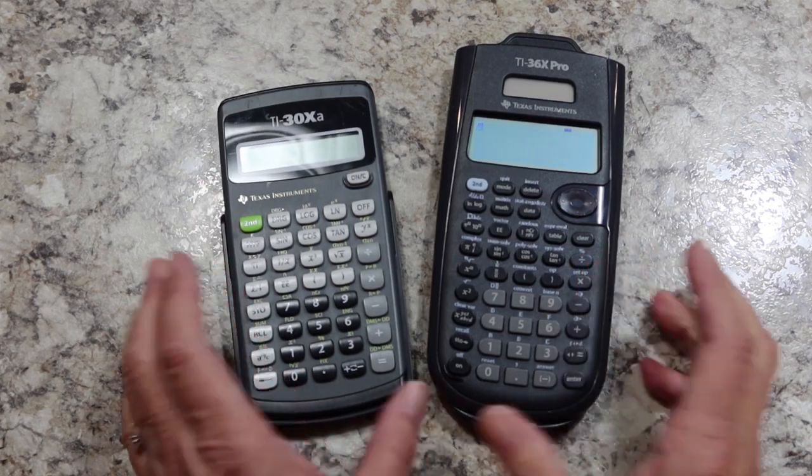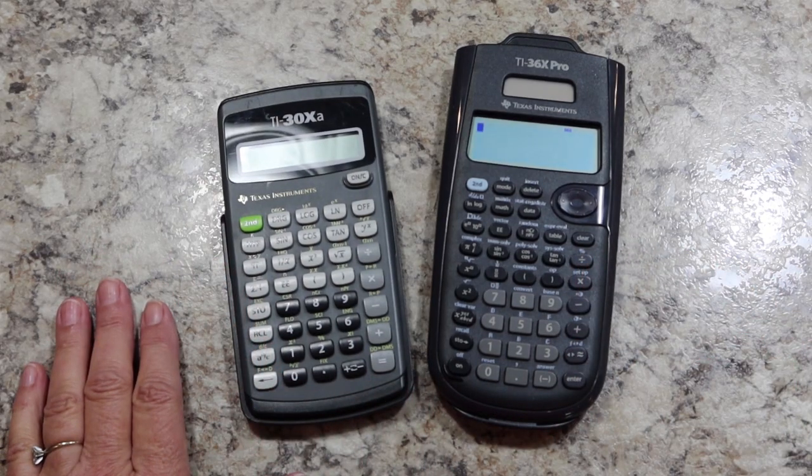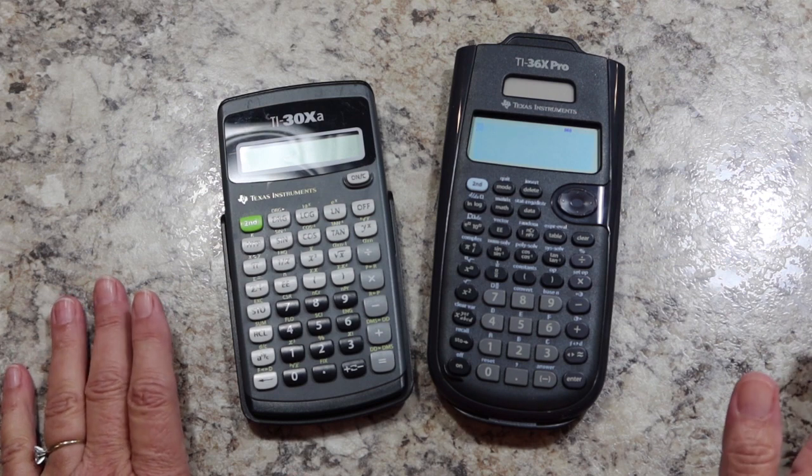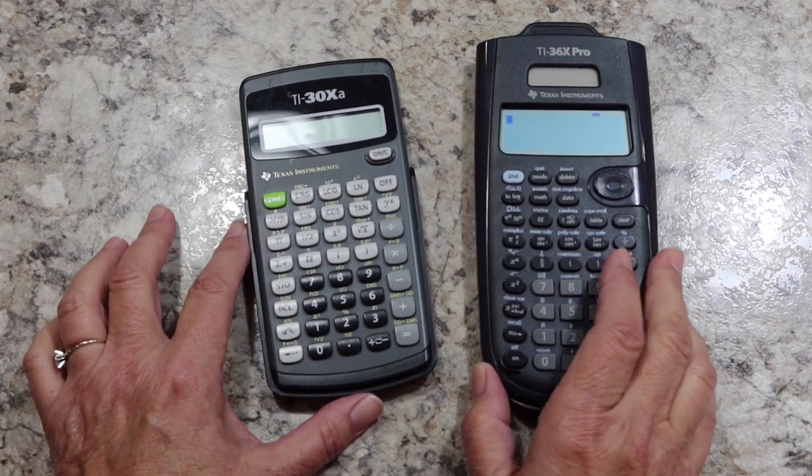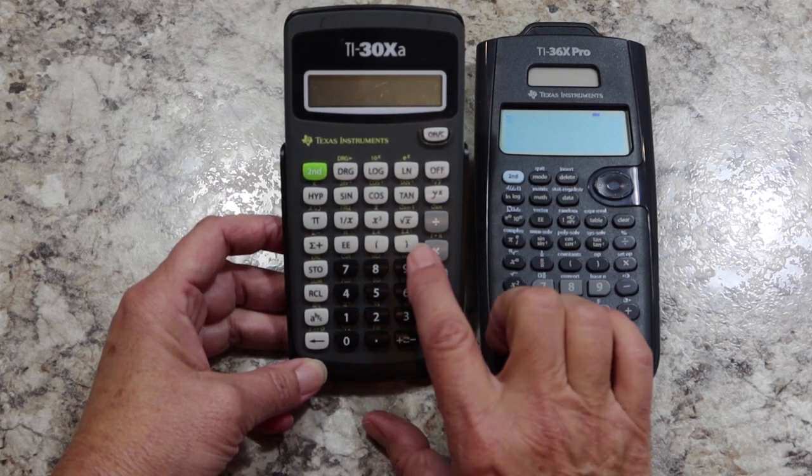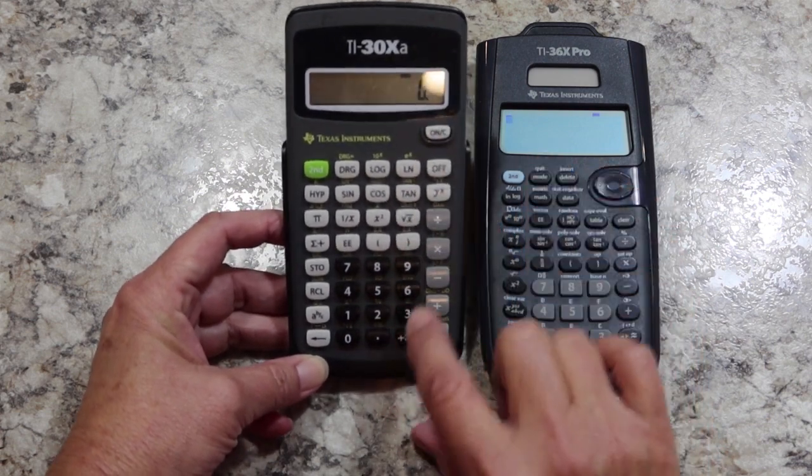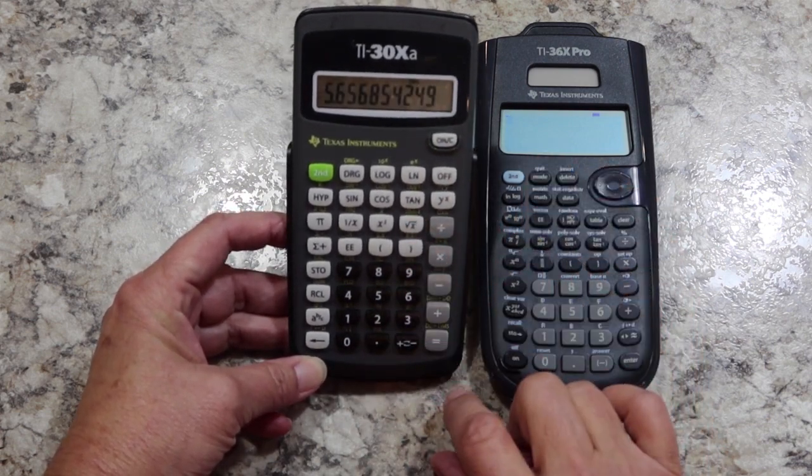Now, of these two, one of the first things is a lot of the answers on the ACT, they want the exact answer. And this is what I mean by that. If I take this calculator and I want to find the square root of 32, so if I push 32 square root,